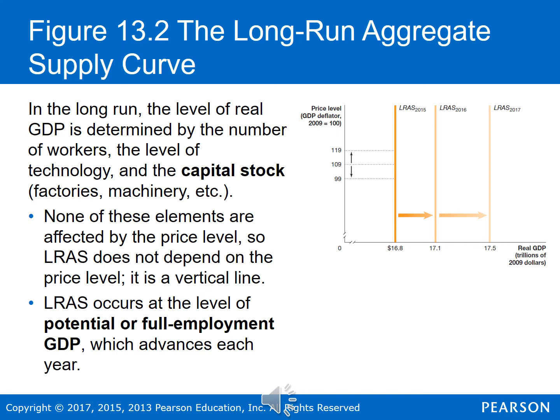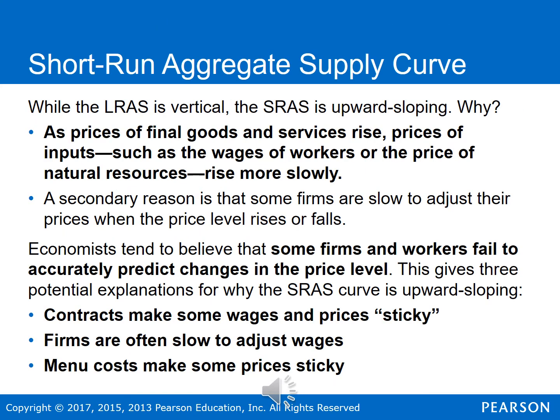The long run aggregate supply occurs at the level of potential or full employment GDP, which advances every year. Why does the long run aggregate supply curve shift to the right each year? There are three reasons: first, the number of workers in the economy increases over time as more people are born and enter the workforce; second, the economy accumulates more machinery and equipment, increasing our potential production; and finally, technological change occurs over time, increasing each worker's productivity. The figure on the right shows the vertical long run aggregate supply curve shifting to the right as potential GDP increases from one year to the next.